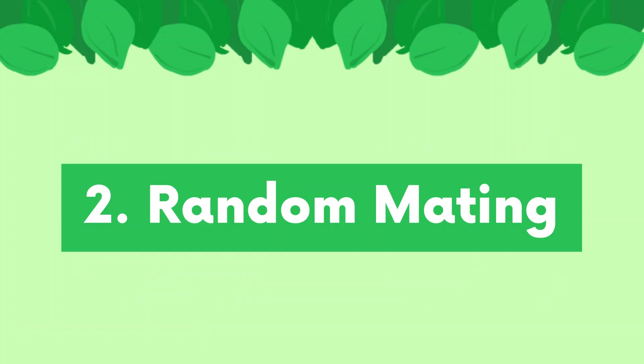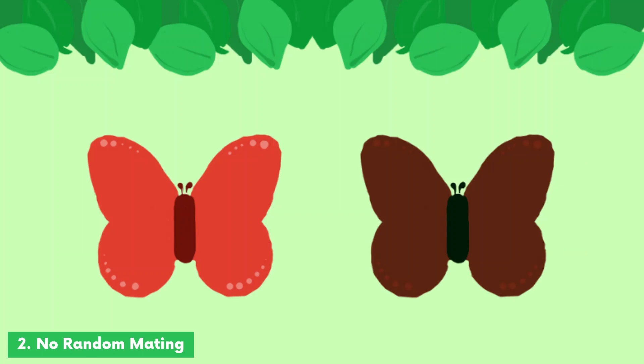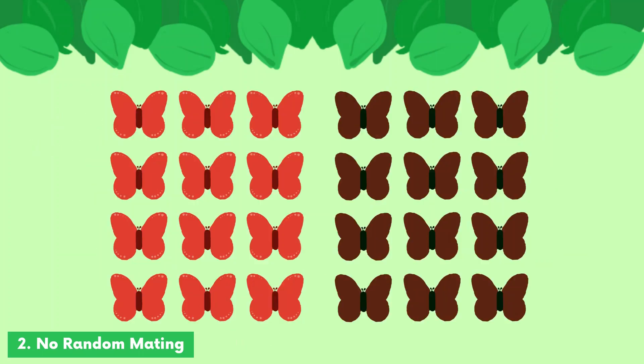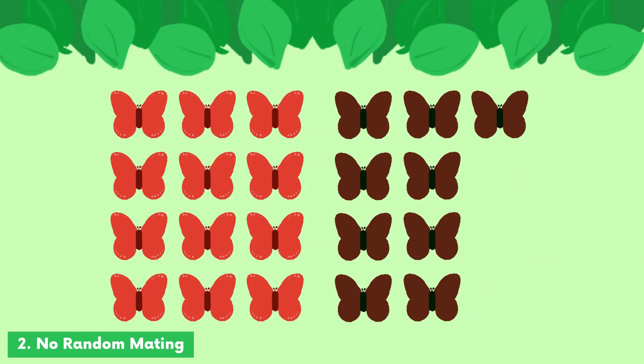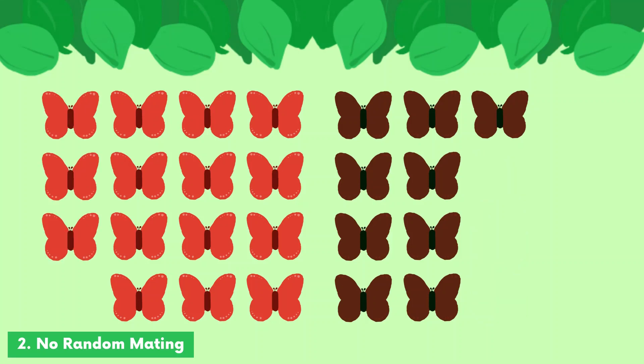Second, there must be random mating. If mating isn't random — for example, if females in a butterfly population preferred mating with red males over brown males — the number of red butterflies compared to the brown butterflies would increase and the population would not be in equilibrium.